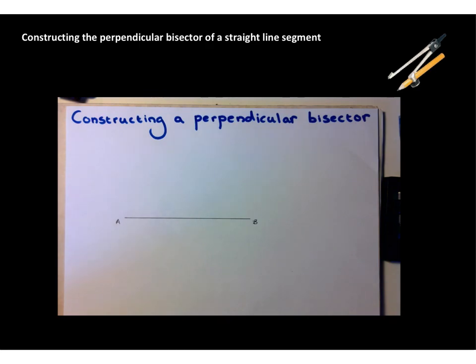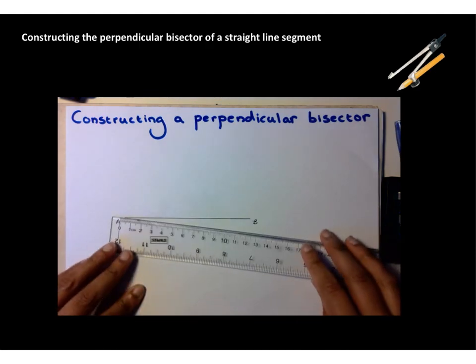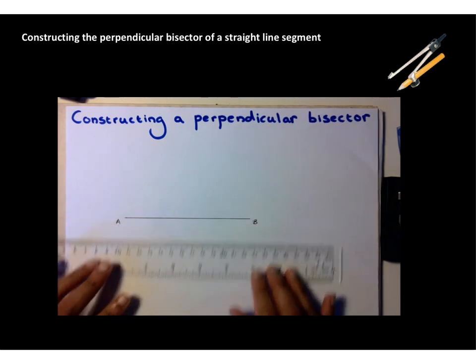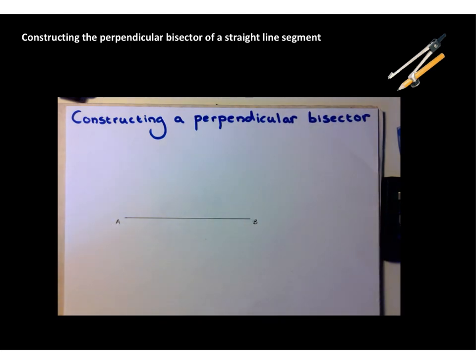You can see I have a straight line segment on the page here which is 12 centimeters long from A to B, and what we're going to do is construct a line which splits AB in half, so it bisects AB and it does so at 90 degrees, a perpendicular bisector. That will allow us to find the midpoint, which is probably approximately here, of this line AB.